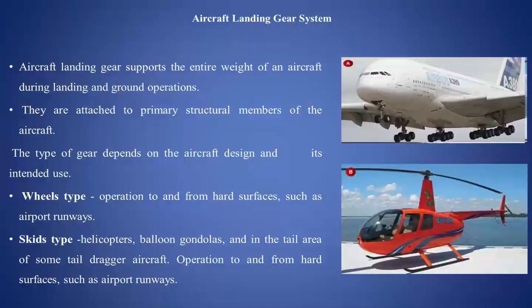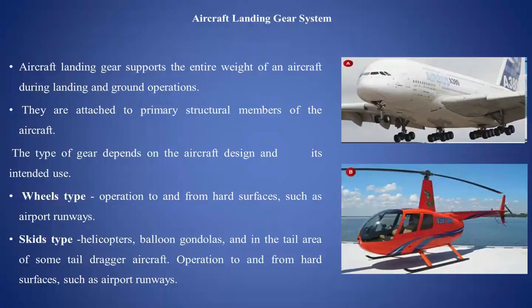Wheel type: operation to and from hard surfaces such as airport runways. In the first figure, you can see an aircraft with wheels — these wheel-type landing gears operate from hard surfaces such as runways. In the second figure, you can see a helicopter with a skid; there are no wheels. Skid-type helicopters, balloons, gondolas, and the tail area of some tail-dragger aircraft also operate to and from hard surfaces such as airport runways.